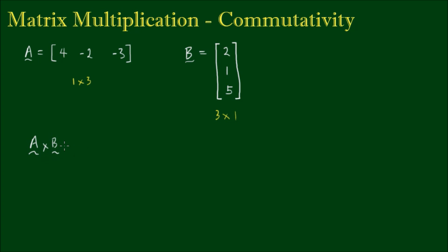So if we multiply matrix A by B, we perform the usual row by column operation. So we have 4 by 2, plus negative 2 by 1, plus negative 3 by 5, which equals 8, minus 2, minus 15, which equals minus 9.